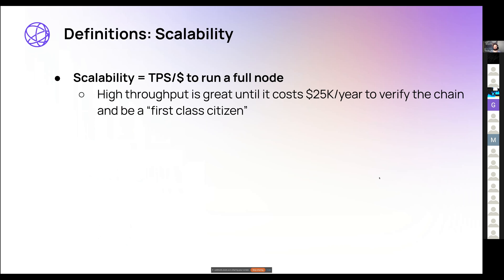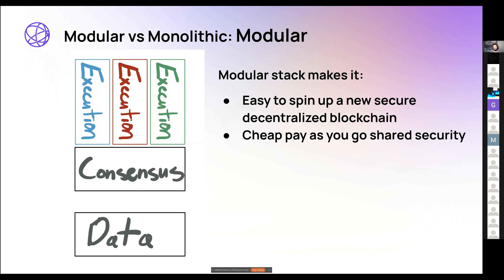On namespaces: you do not have to have all of Celestia's block data. All rollup blocks are mixed together, ordered by namespace. When you want data, you ask a Celestia node or a peer-to-peer network for the data for your specific namespace and you get just that data. That's how you sync your node — every time there's a new Celestia block, you ask if there are any messages in your namespace, and the peer-to-peer network gives you back those block data.